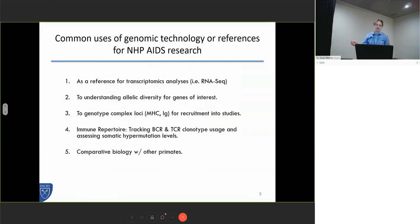Why do we want to apply genomics to NHP research? We've been for many years using it as a reference for various RNA-seq and transcriptomic analyses. We've been working for many years with people in this room to get to an area where we can now start to understand allelic diversity of genes of interest. People like David O'Connor have done a great job using genomics to genotype some of these difficult complex loci that are very important for recruitment of animals into our studies.